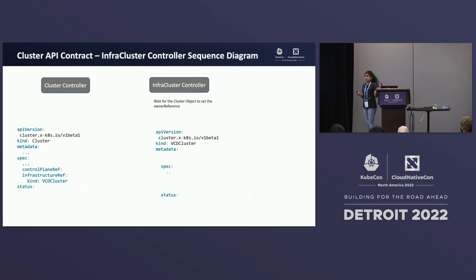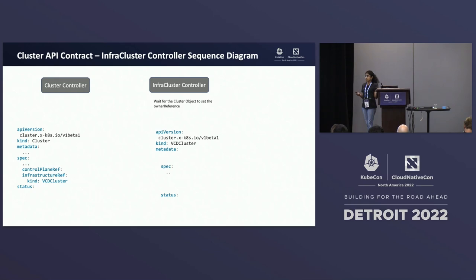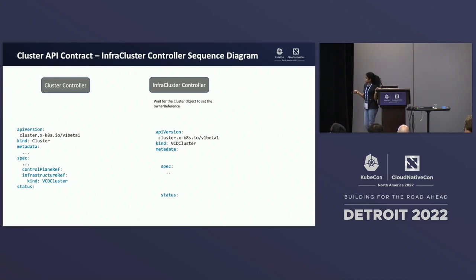Now that we have a fair understanding of the hierarchy of API objects, let's understand the Cluster API contract. As mentioned before, all controllers from the providers are responsible for certain things and need to adhere to orchestration rules dictated by the core CAPI component. These controllers interact with each other via variables called well-known fields. Let's look at how the cluster controller and infra cluster controller interact in a sequence diagram.